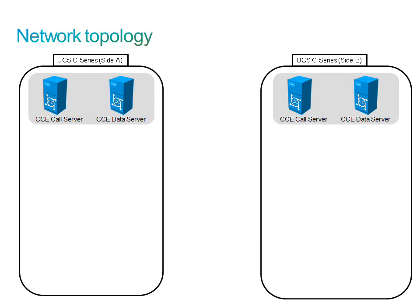The CCE data server functions as the logger, which is the database server that stores contact center configuration data and stores historical reporting data for distribution to the data servers. It also functions as the administration and real-time data server, also known as the AW.